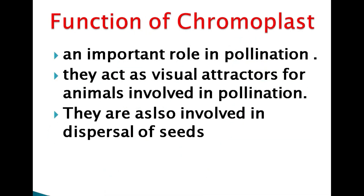An important function of chromoplast is its role in pollination. Chromoplasts act as visual attractors because they give color other than green. Flowers may look yellow or red, attracting insects. When insects come, they carry pollen to other flowers, helping in pollination. Chromoplasts are also involved in the dispersal of seeds.